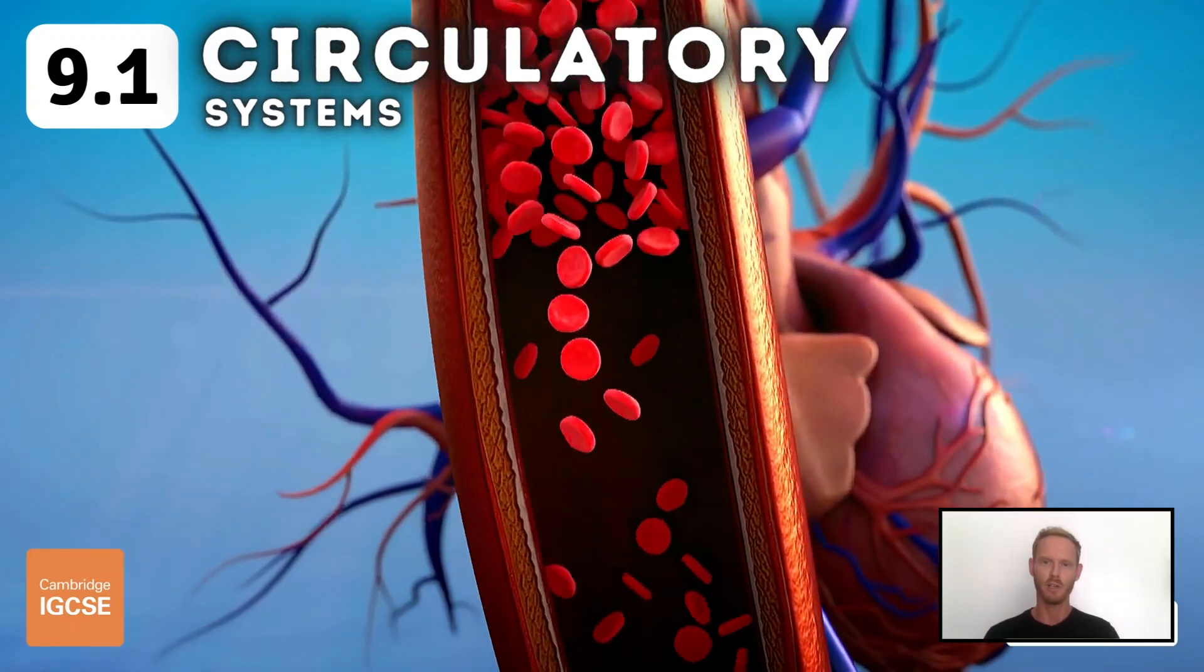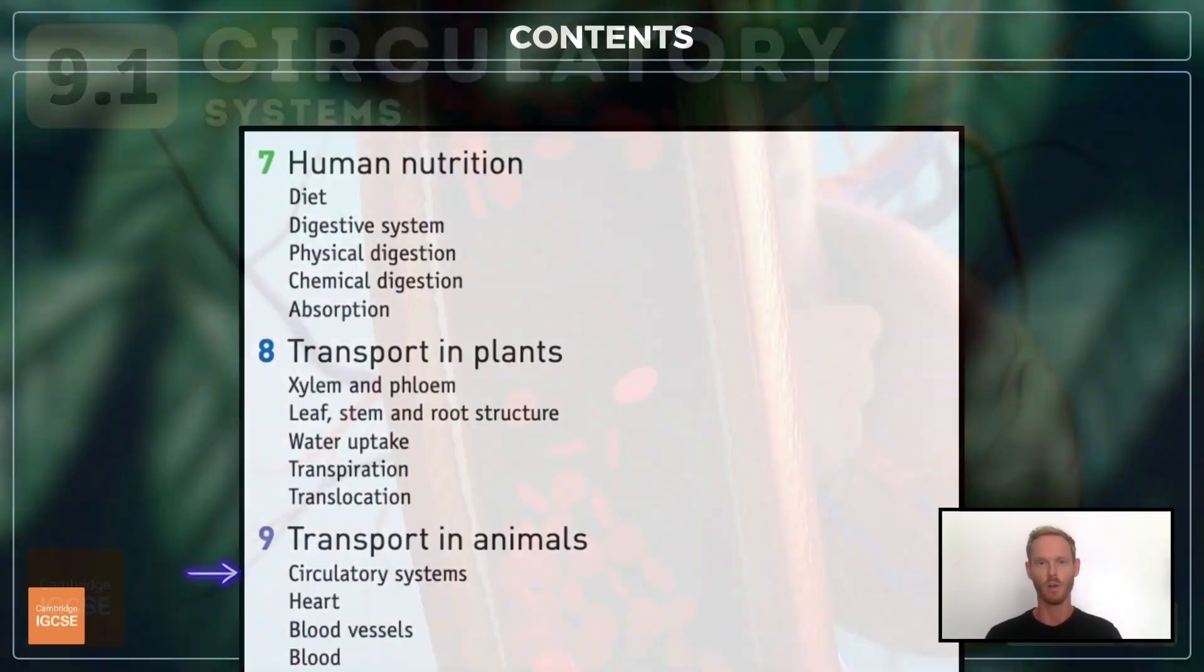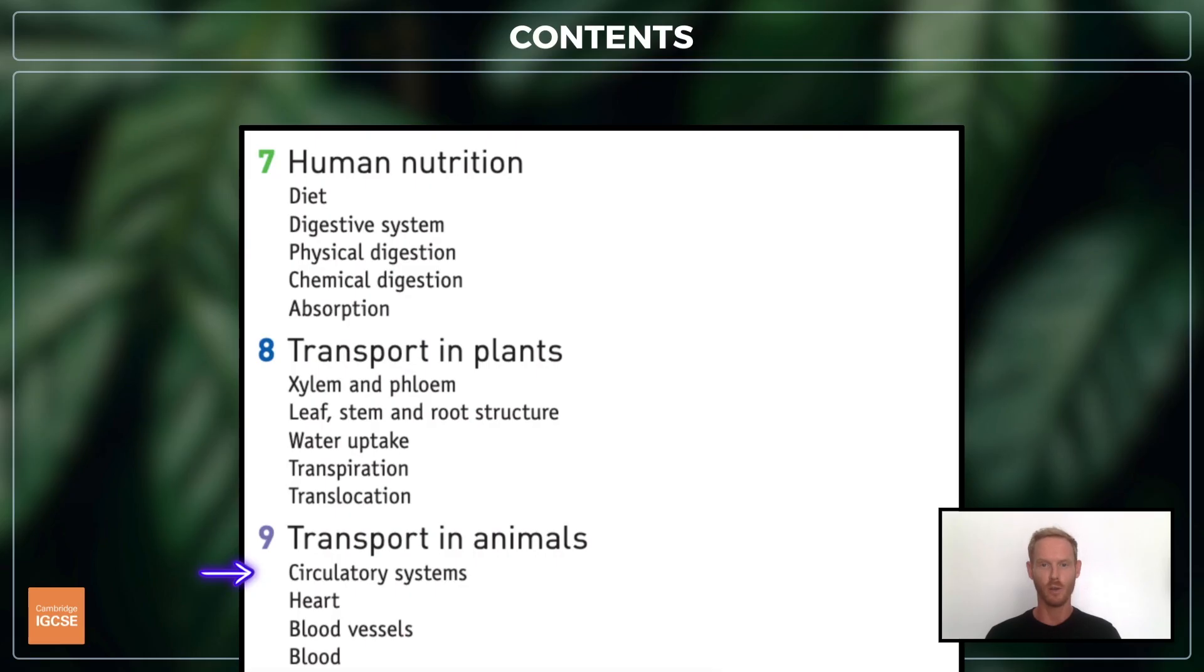Hello and welcome to another complete Cambridge IGCSE biology lesson, where you'll learn absolutely everything you need to know on topic 9.1, circulatory systems.